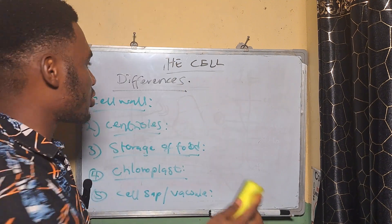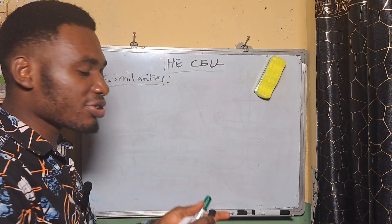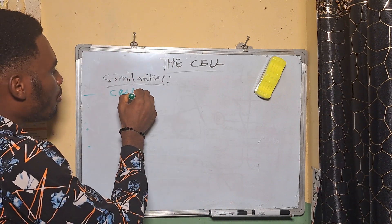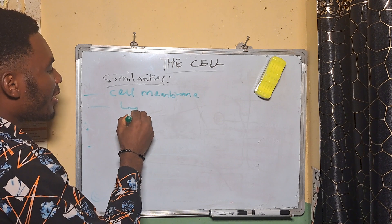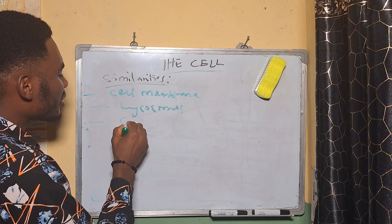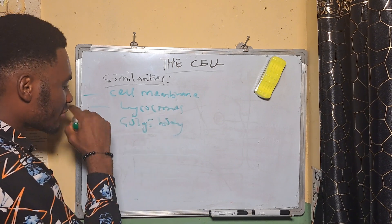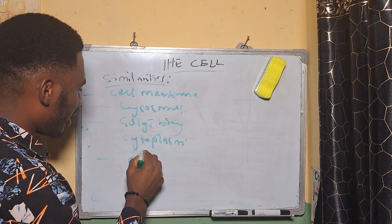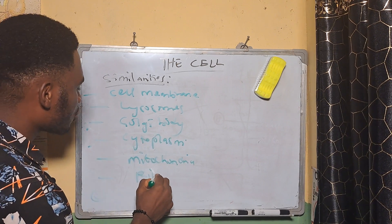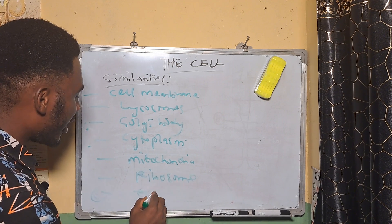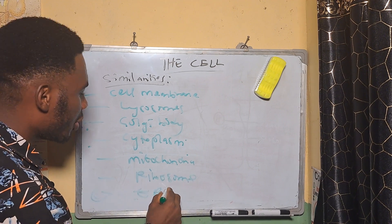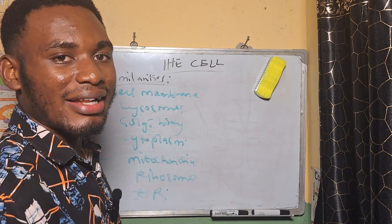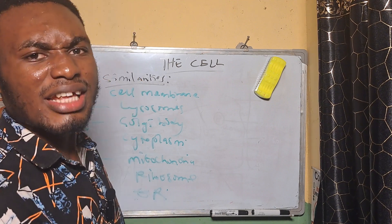Now for the similarities between the two cells: both cells have a cell membrane, both have lysosomes, both have a Golgi body, both have a cytoplasm, both have mitochondria, both have ribosomes, and both have endoplasmic reticulum. These are the similarities between the plant and the animal cell.